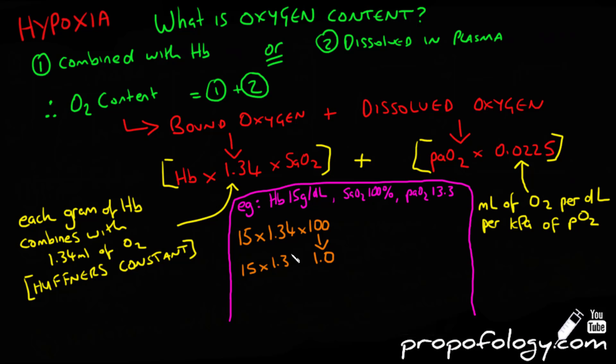Yes you've got 100% but you need to change that to express it as a decimal. You need to put 1 for 100% or 0.75 for 75% and you add it to 13.3 multiplied by that number 0.0225. You'll then get 20.1 plus 0.3 and that will obviously give you 20.4 mils of oxygen per deciliter.